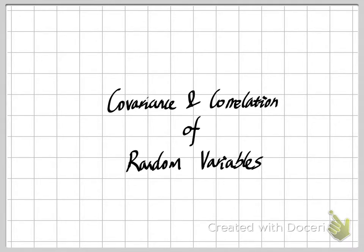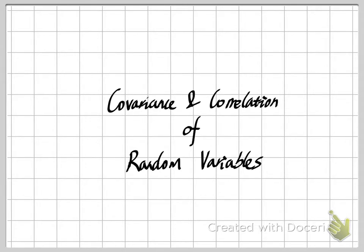When we talk about a random variable, no matter it's continuous or discontinuous, we always talk about the mean of it, the variance of it, and of course also the PDF of it. So here in this video, the first thing I want to talk about is the mean of a function of two continuous random variables, or in other words, the expected value.